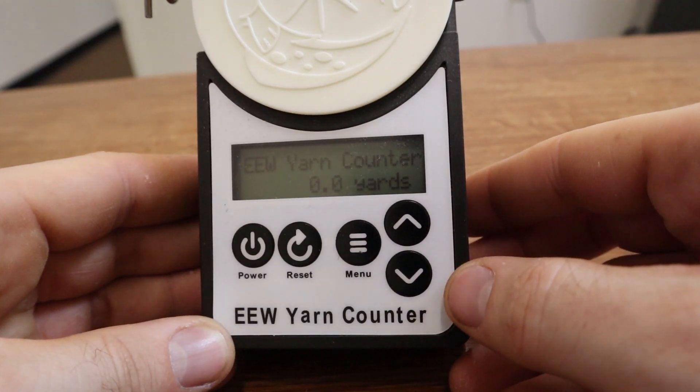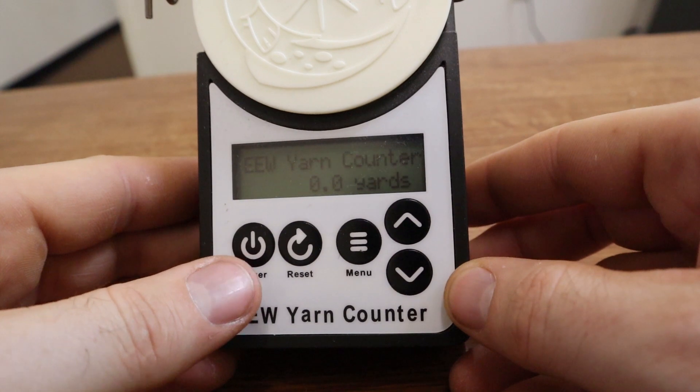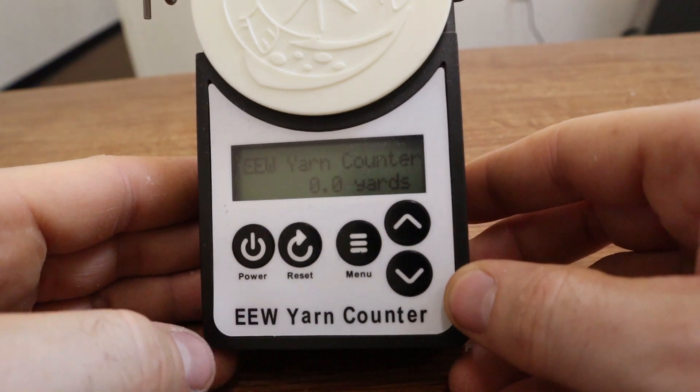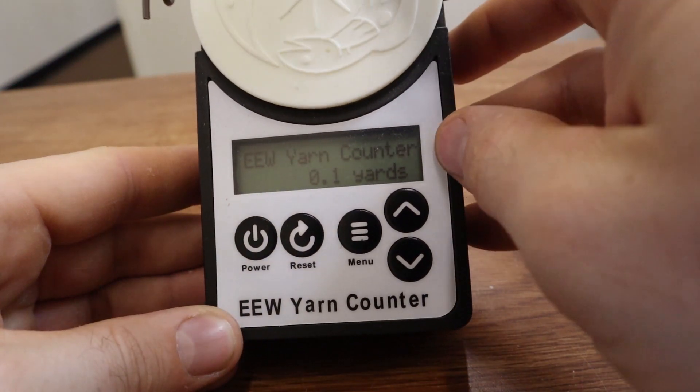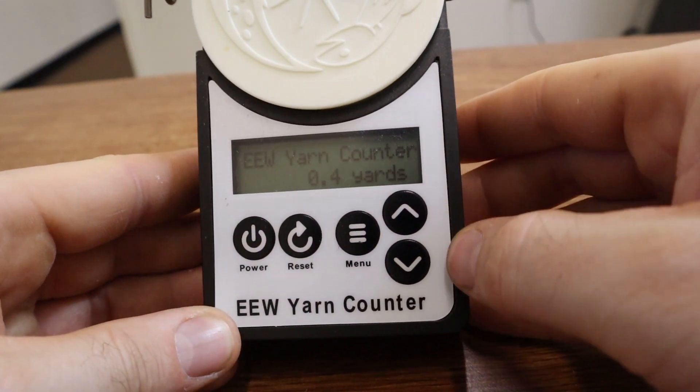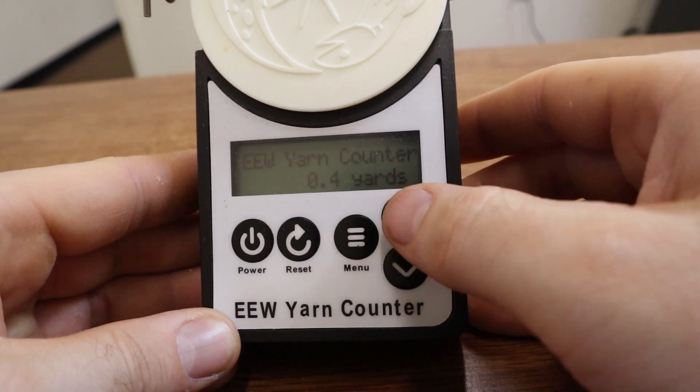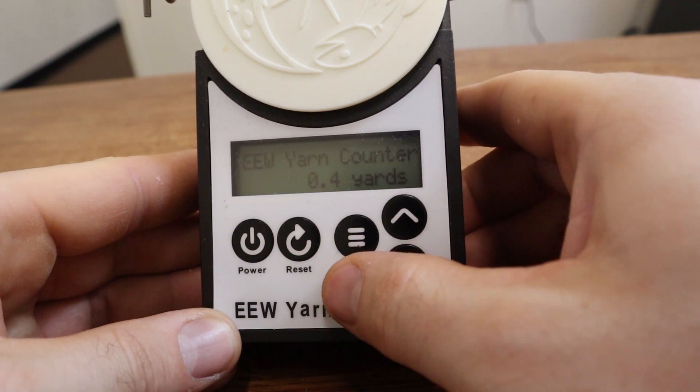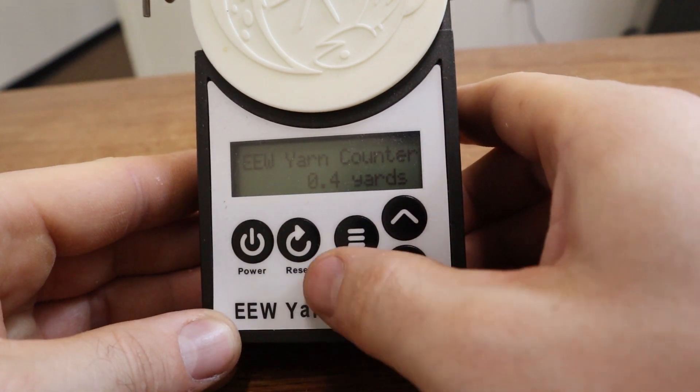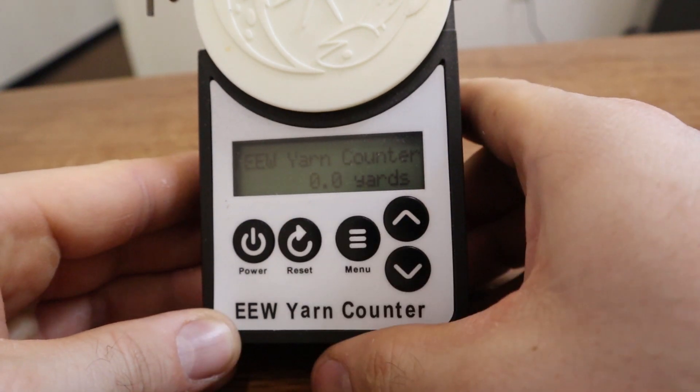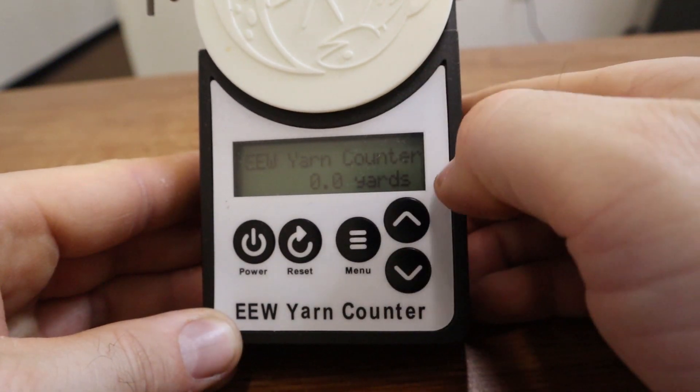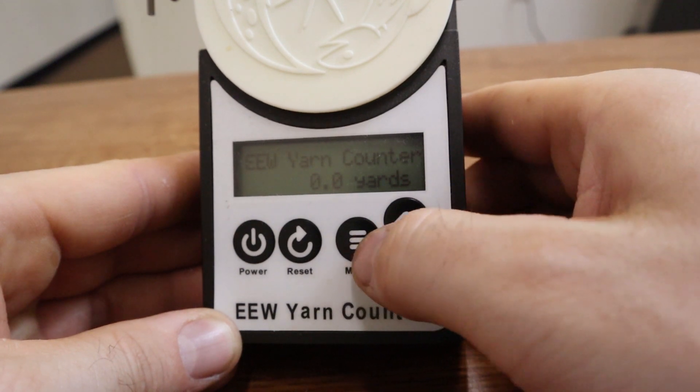So now I'll go through the different menus on this version of the software for the electric e-wheel yarn counter. So this is the main menu. This is what it starts at. As the disk spins, it counts the distance, and it can count in either yards or meters. I'll show you in a future menu how you change that. If you want to get the distance back to 0, you hit the reset button, and that's pretty much all there is to this menu.